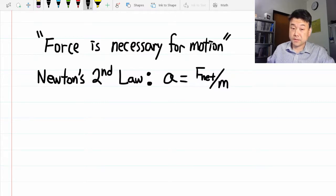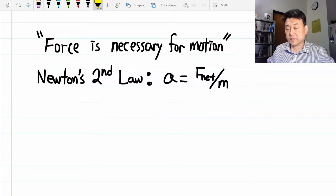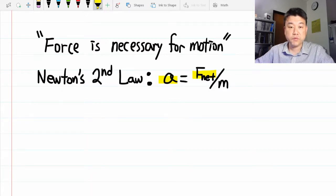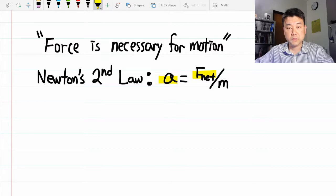So what this means is for an object that is already in motion, if the applied net force is zero, then the acceleration will be zero. And since acceleration is rate of change of velocity, the velocity of the object already in motion won't change. So it will remain in motion.